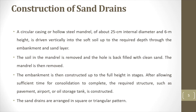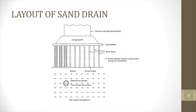The embankment is then constructed up to the full height in stages. After allowing sufficient time for consolidation to complete, the required structure — such as pavement, airport, or oil storage tank, etc. — is constructed. The arrangement or layout of the sand drains can be either in a square or triangular pattern. The figure shows the sand drains installed below an embankment. The arrows show the passage of water from the pores to the sand drains, and here you can see the structure has been constructed over the sand drains.